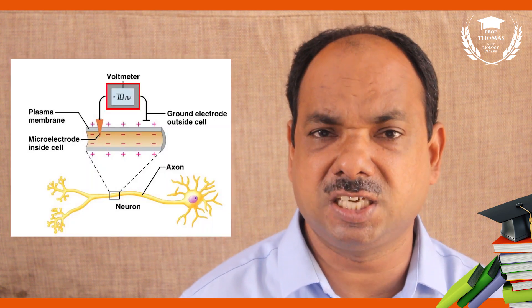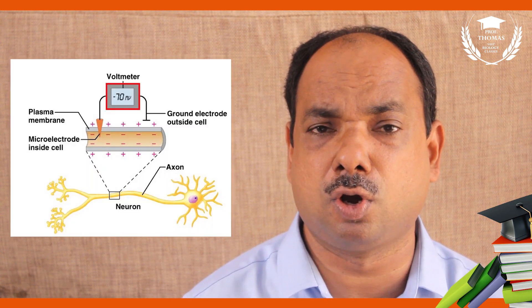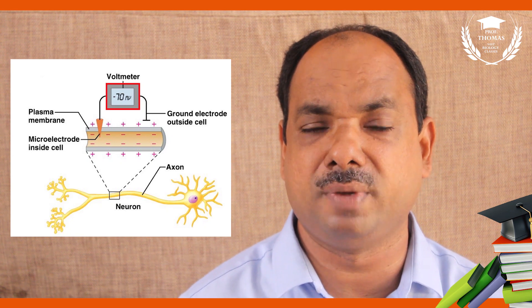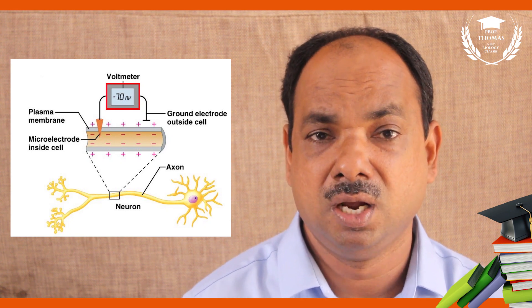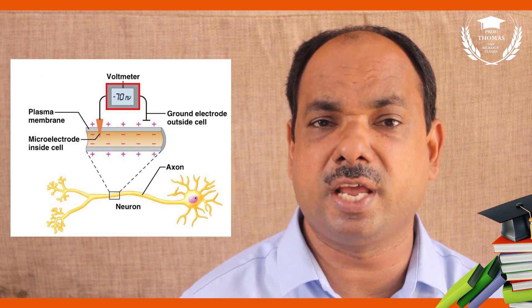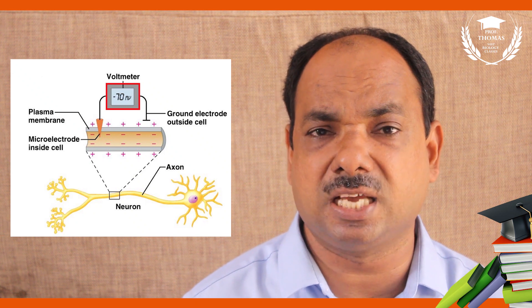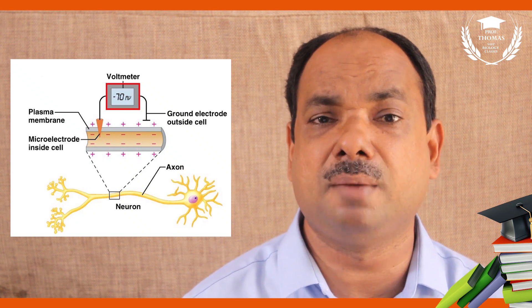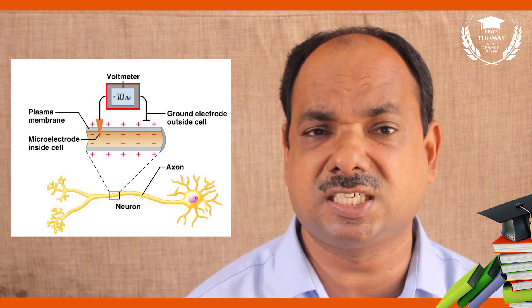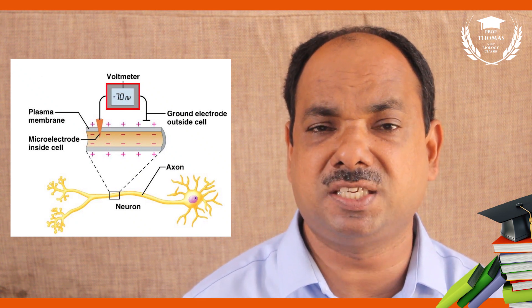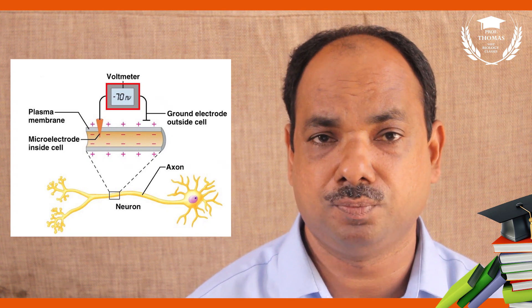Dementia is another associated condition. The resting membrane potential is minus 70 millivolts. A sodium-potassium pump plays a major role in impulse conduction, and conduction of nerve impulses is unidirectional.